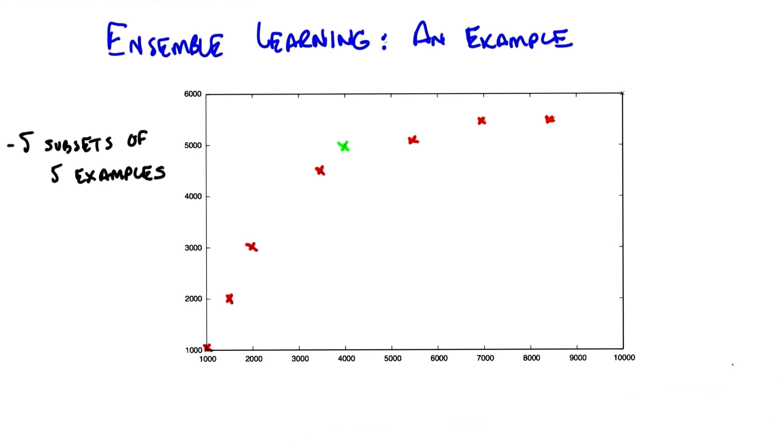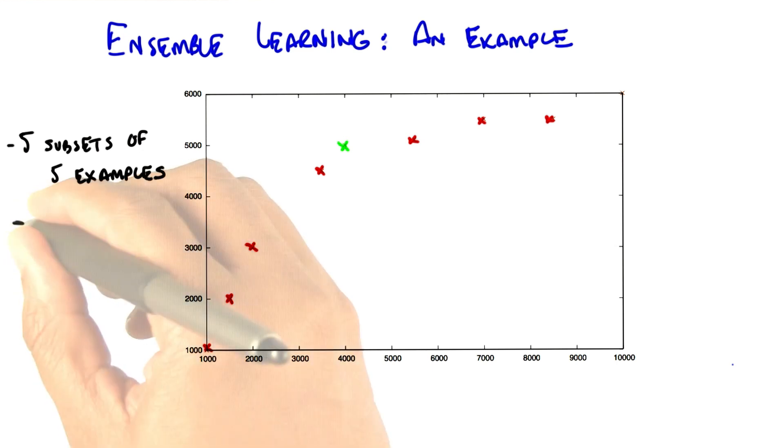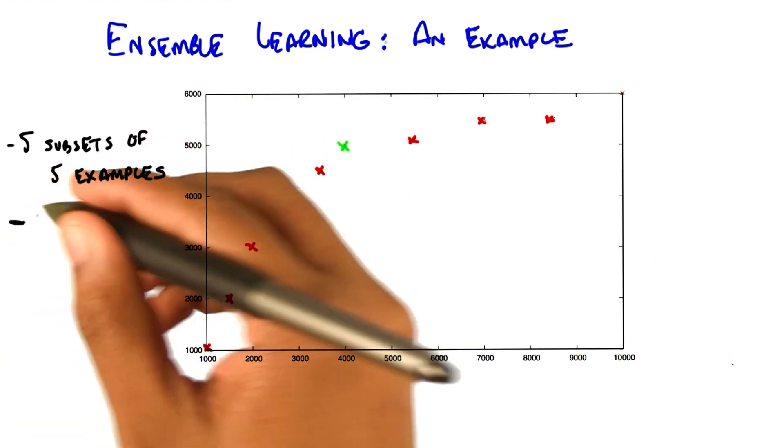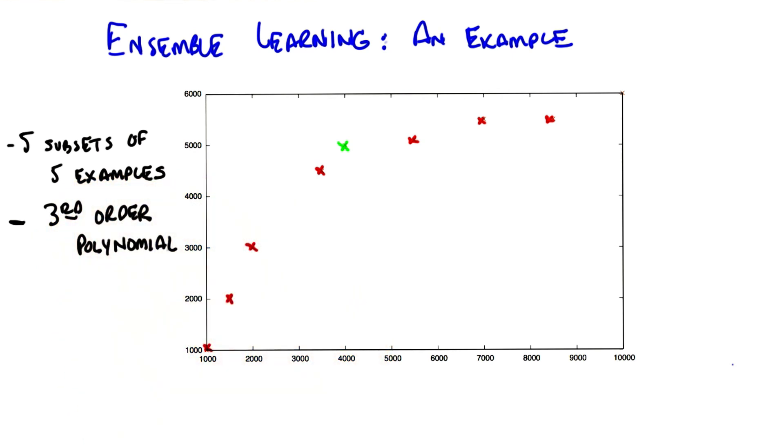So five subsets of five examples. And then I'm going to learn a third order polynomial. I'm going to take those third order polynomials, learn on that subset, and then combine them by averaging. You want to see what we get?